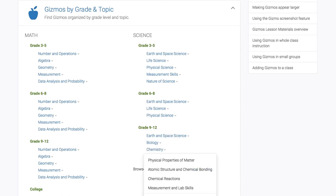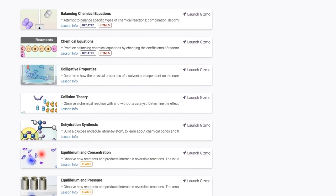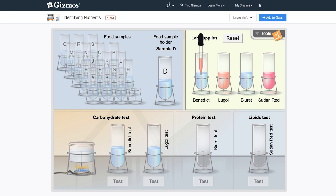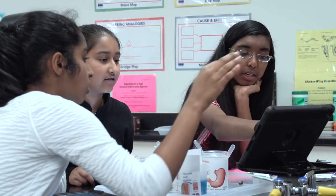So if you need a chemistry Gizmo on matter then you can go in and you can search it easily by that performance expectation, you can search it by topic, by grade level, and there it is. And using Gizmos they master more of the standards more quickly than they do without. I guarantee that.